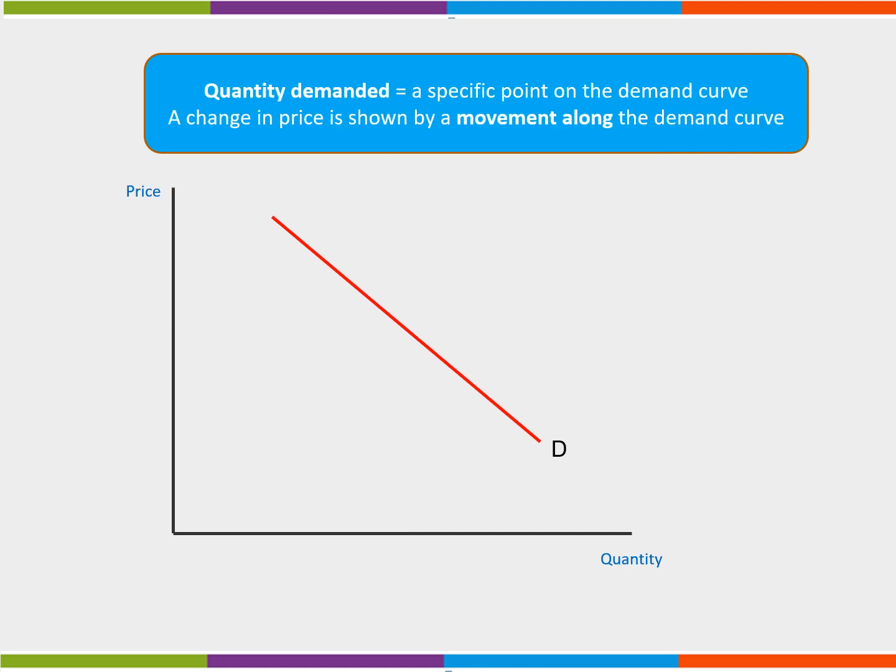In economics, when we talk about demand, we're looking at the entire demand curve. When we talk about quantity demanded, we're looking at a specific point on the demand curve, which corresponds to a specific price.